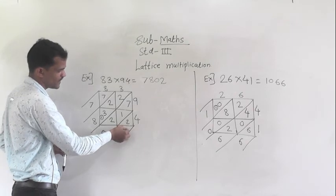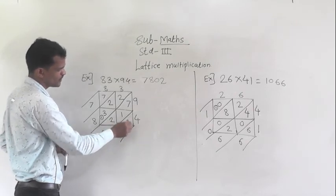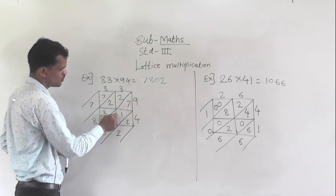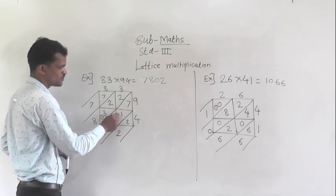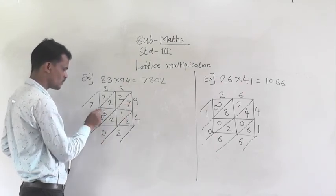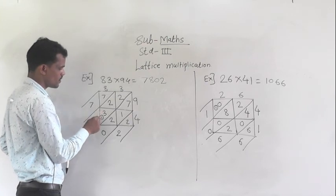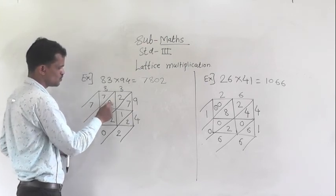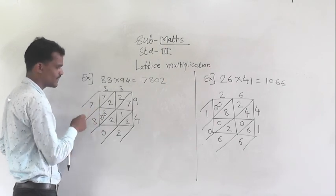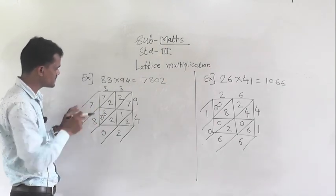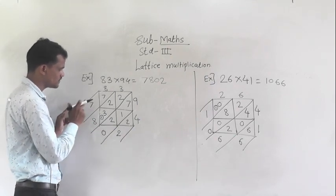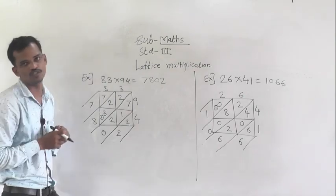Start from this side. Here 2 — only a single digit, so write 2. Then add 2, 1 and 7: 2 plus 1 is 3, 3 plus 7 is 10. So 10 means 0 right here, 1 carry to the next step. Then 3 plus 2 is 5, 5 plus 2 is 7, plus 1 carry is 8, and then 7. Write the answer: 7, 8, 0, 2 — which is 7802.